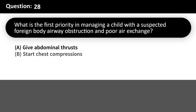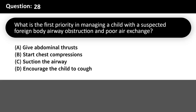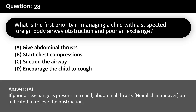What is the first priority in managing a child with a suspected foreign body airway obstruction and poor air exchange? A. Give abdominal thrusts. B. Start chest compressions. C. Suction the airway. D. Encourage the child to cough. Answer: A. If poor air exchange is present in a child, abdominal thrusts (Heimlich maneuver) are indicated to relieve the obstruction.